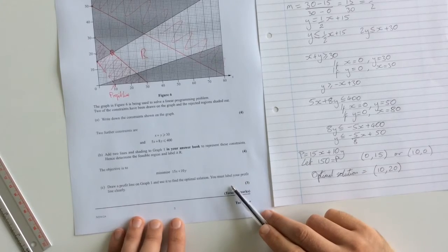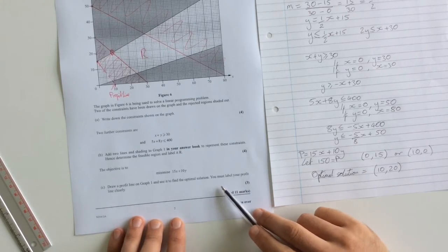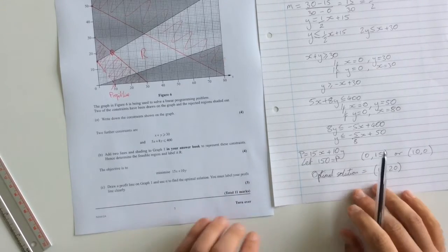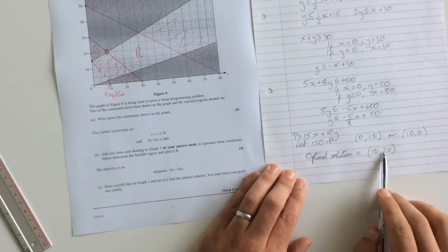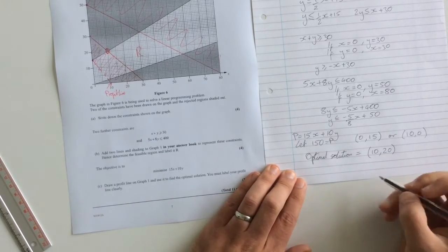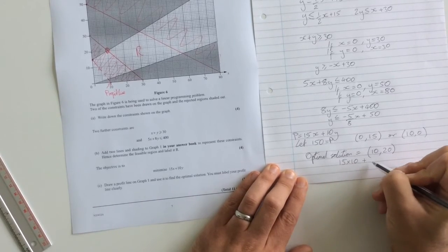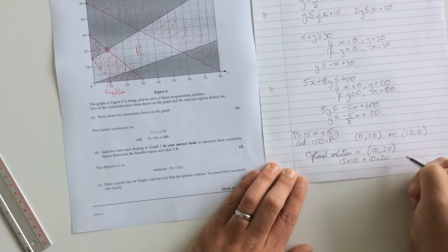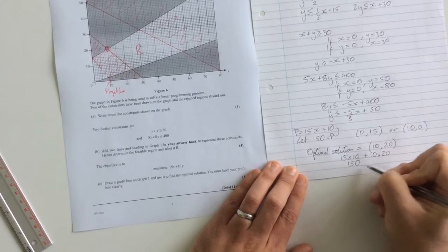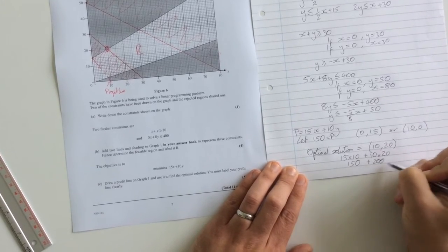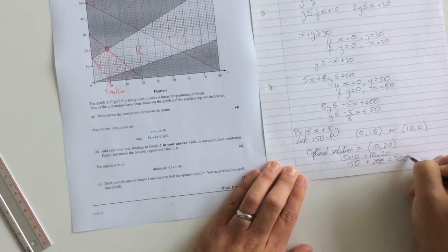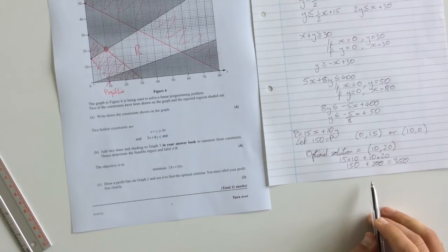Notice that in this question it doesn't say find the optimal value of the profit. Sometimes they will, in which case you would just take these two values and substitute them into your expression. So 15 times 10 plus 10 times 20, which is 150 plus 200 is 350. This question doesn't ask you, but quite often they will. But that very simply is how to answer that linear programming problem.